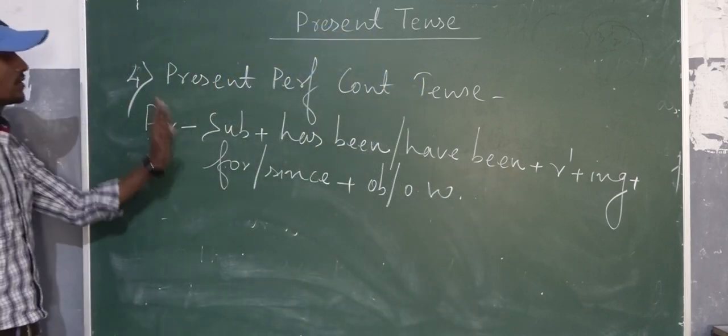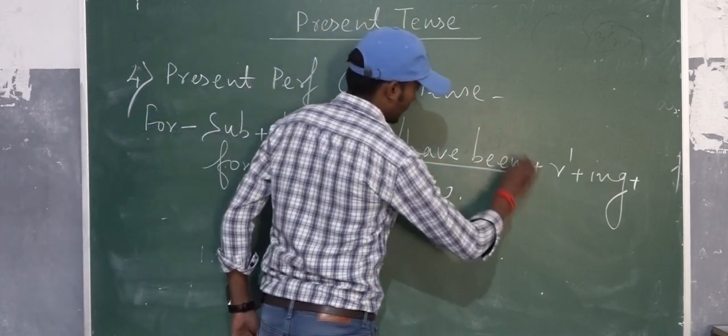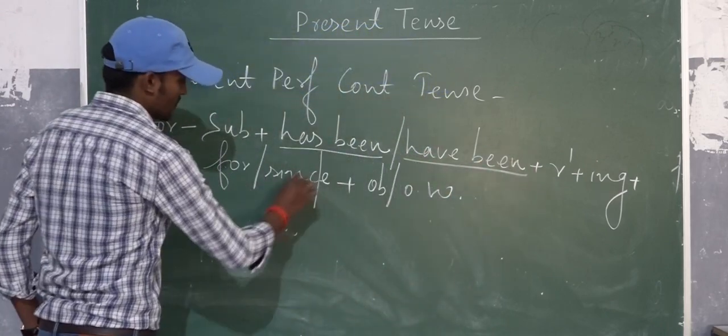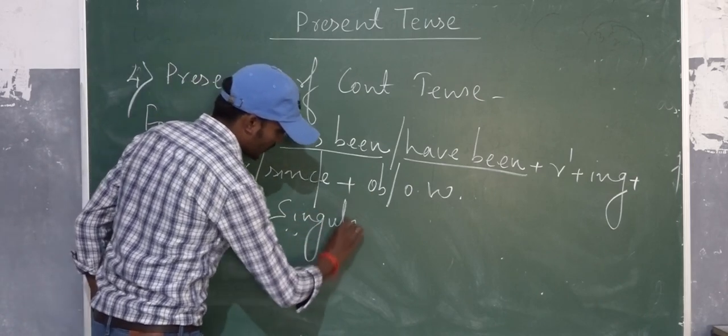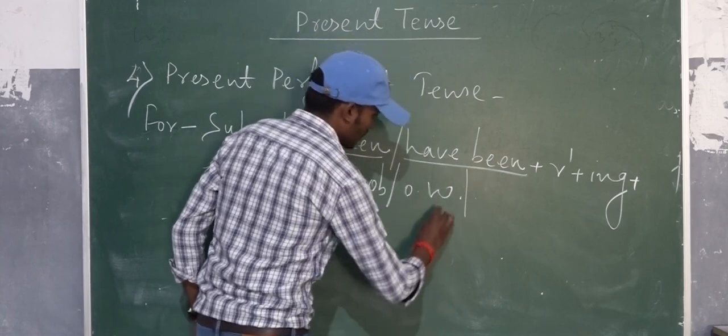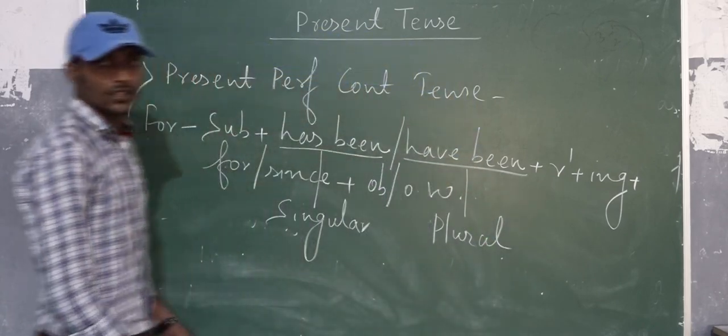Present Perfect Continuous tense. We use 'has been' or 'have been'. Where we use 'has been'? If the subject will be singular. Where we use 'have been'? If the subject will be plural.